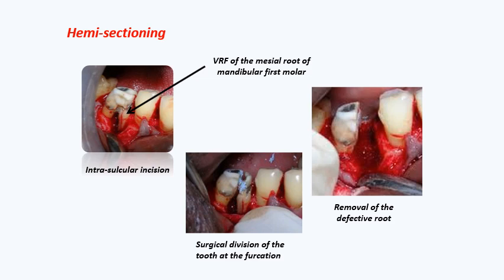As shown, this tooth has a vertical root fracture in one of the roots. The tooth is cut into two halves. The defective half is extracted, while the remaining half of the tooth functions in the mouth as a premolar. After that, bridging can be performed with the rest of the dentition.